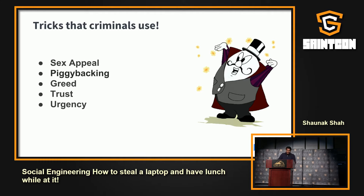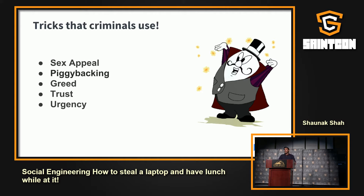Sex appeal is another tactic where scammers tempt users by masquerading as an attractive person. Trust is another one — they claim to represent a high-profile brand. Greed is something I would have fallen for: as a student, whenever I saw a free iPod or a free trip offer, I fell for it. And urgency generally goes hand in hand with compassion — they say if you don't act now you're going to lose this offer. These are some of the common tricks social engineers use.